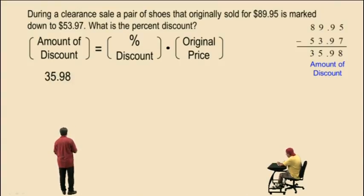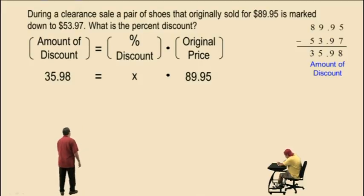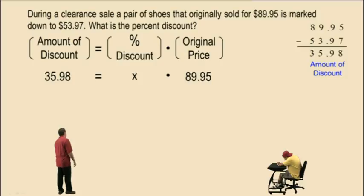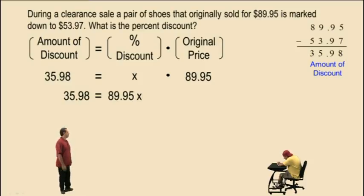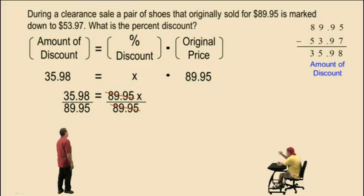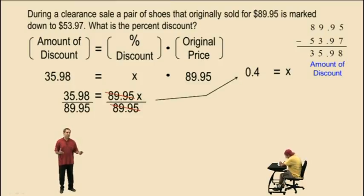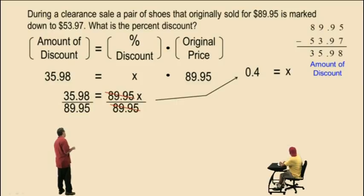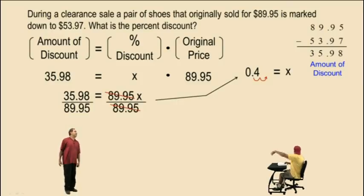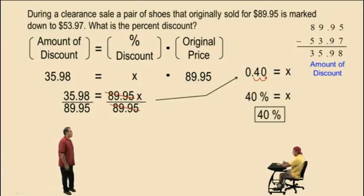So let's put that into our equation. The percent discount is what we are trying to find, so we represent that by variable x times the original price. The original price is the higher price, which is $89.95. Therefore, our equation is $35.98 = $89.95x. We divide both sides by $89.95. Charlie, what did you get? 0.4 — four-tenths, 0.4. And that's x. Remember, x represents a percentage, not a decimal, so we convert by moving the decimal to the right two places. Our answer is 40%. So the percent discount in this case was 40%.